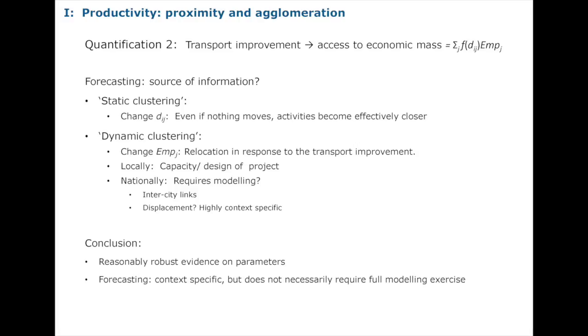So mechanism one — productivity, proximity, agglomeration — to me there is an evidence base and a methodology that allows us to include it with reasonable confidence as a wider benefit in appraisals, in a context-specific way, without always having to run a massive model. There's scope for doing it bottom-up with static clustering and looking at local changes. I should have used the word 'displacement' there as well — I'll come back to displacement issues repeatedly as we go through.